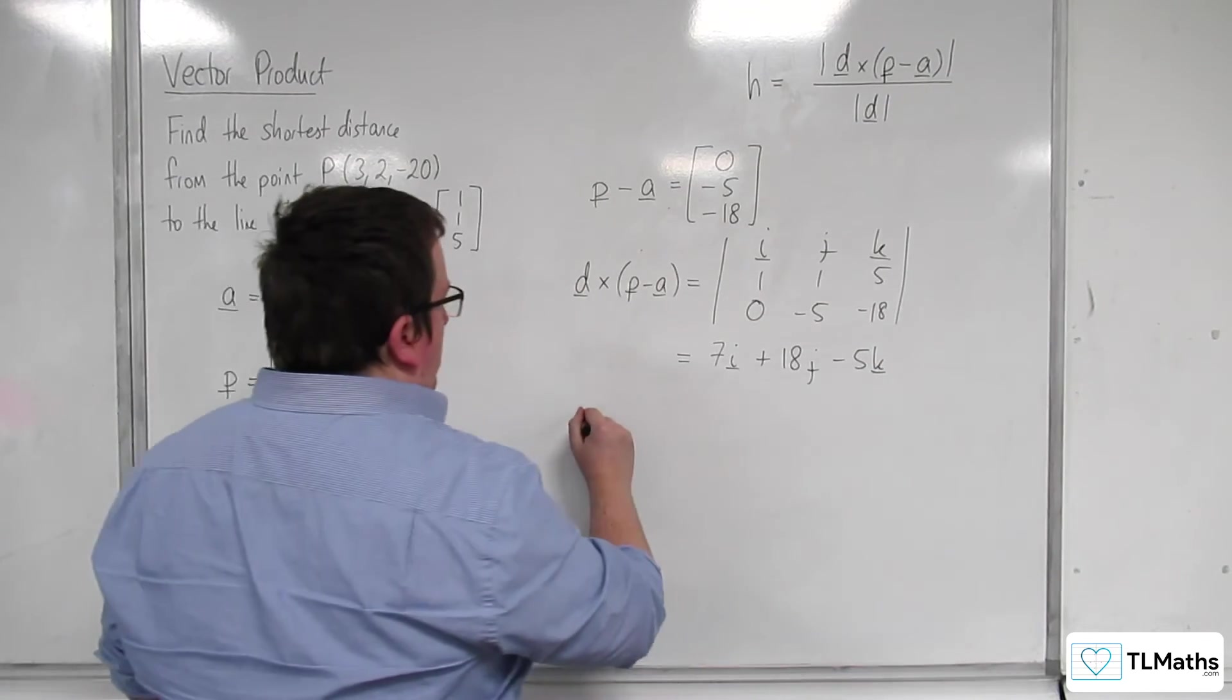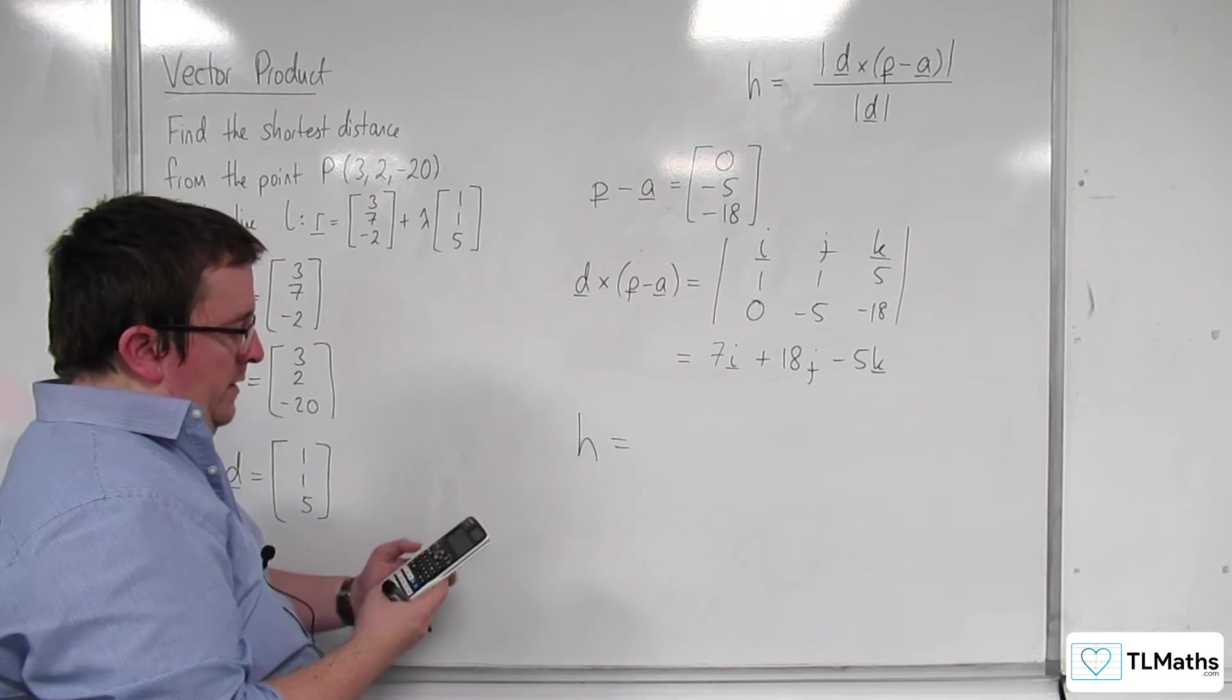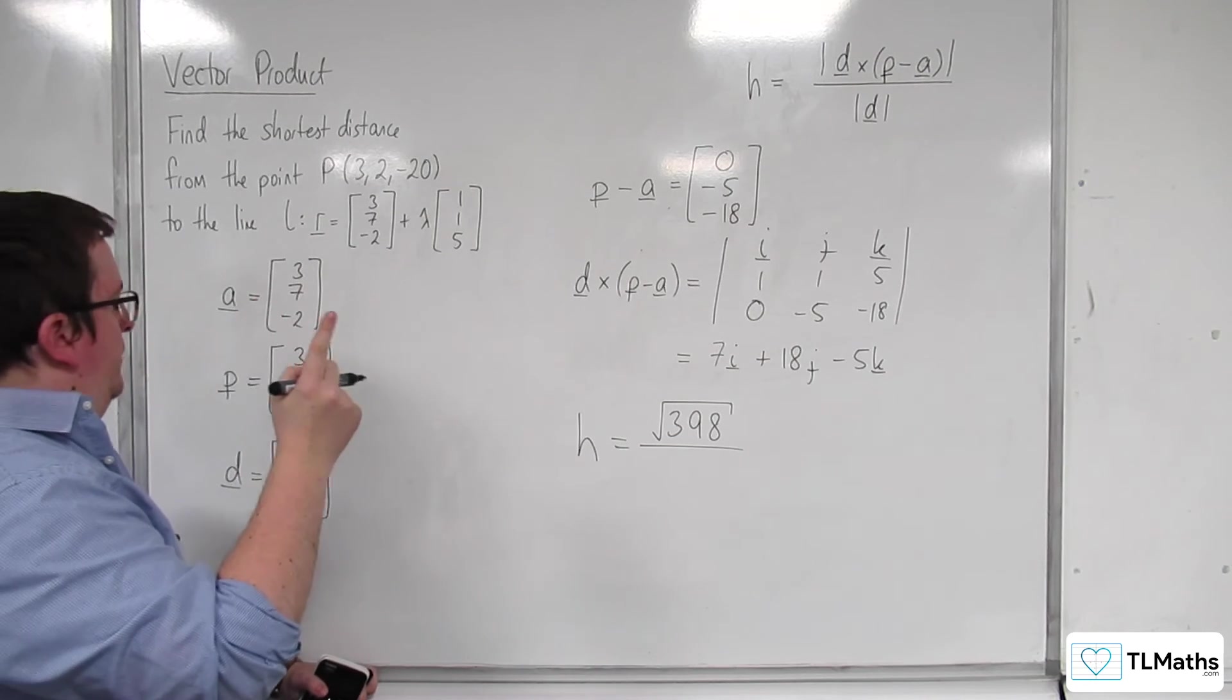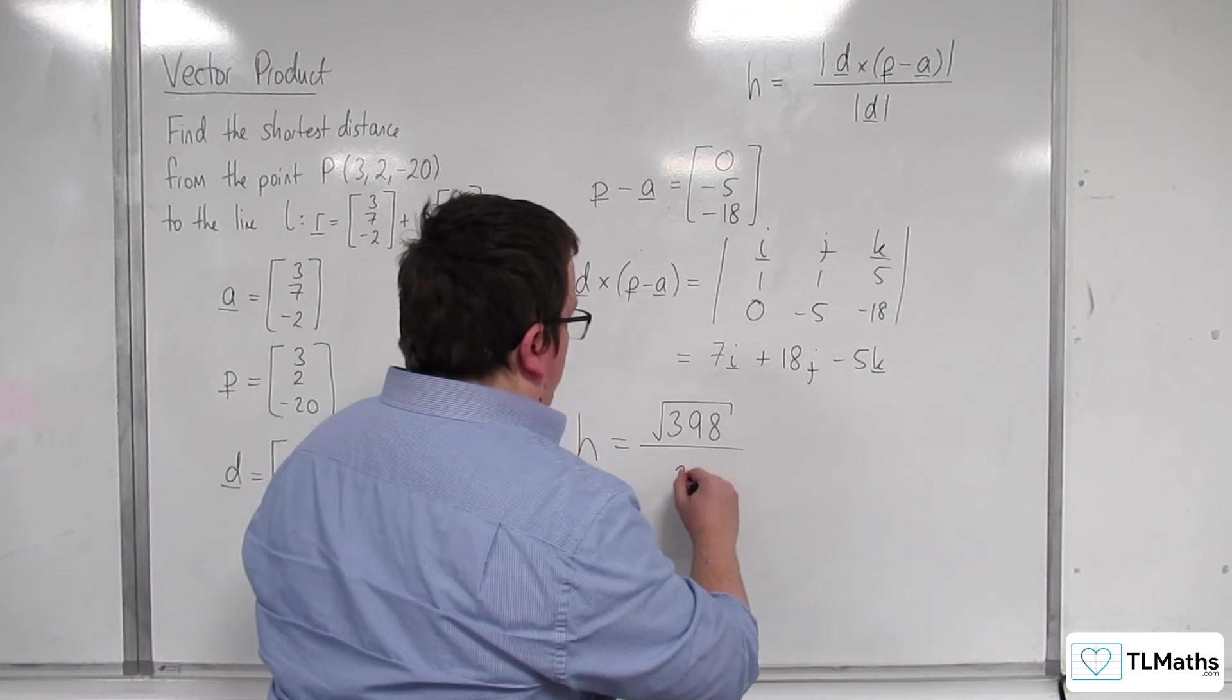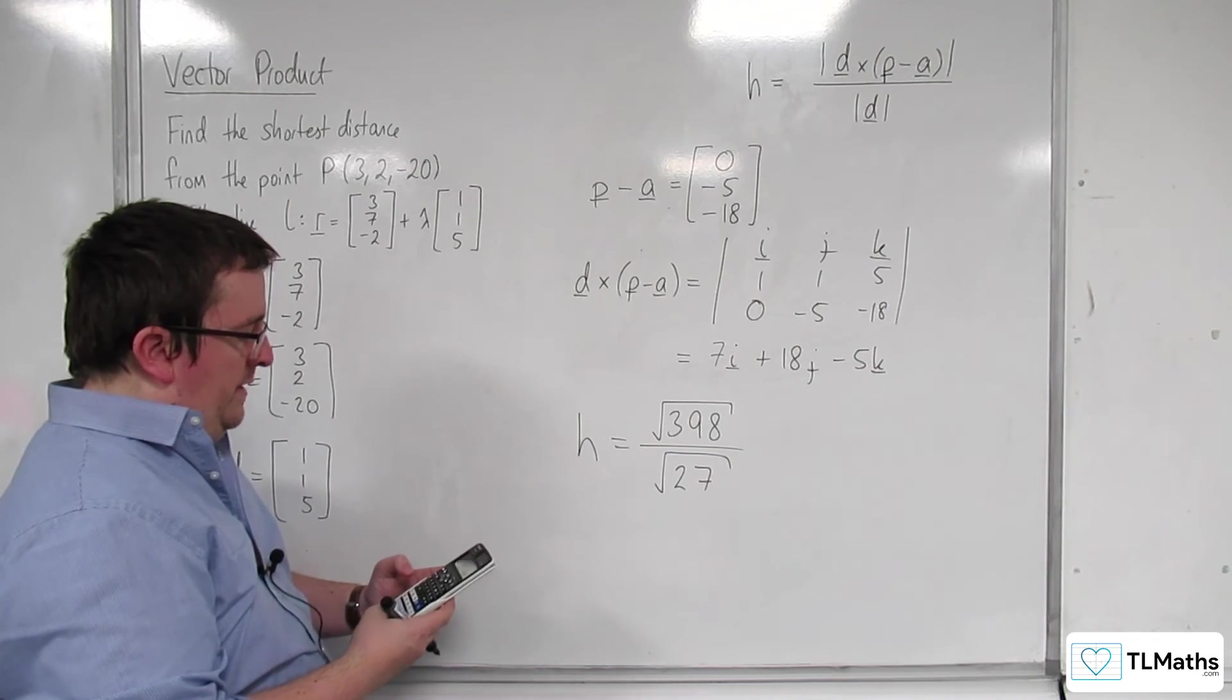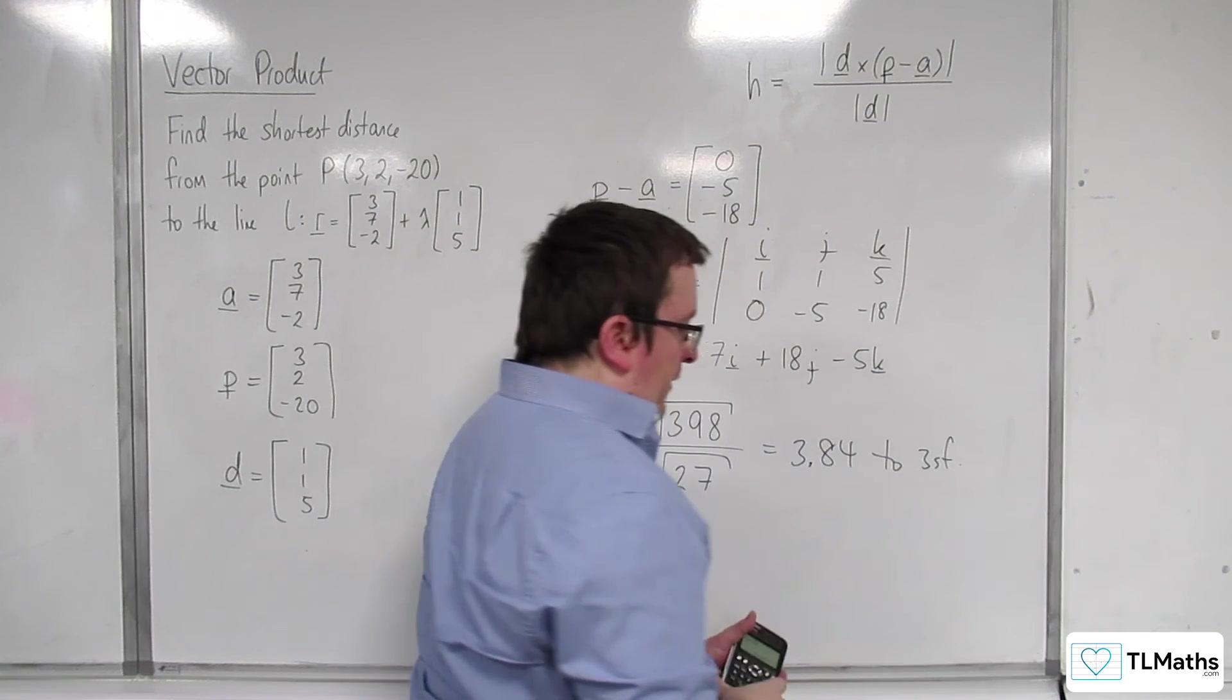H is equal to the length of this, so 7 squared plus 18 squared plus 5 squared. That's square root of 398, divided by the length of D, which is 1 plus 1 plus 25, so root 27. Square root 398 divided by square root 27 equals 3.84 to three significant figures.